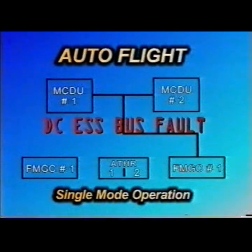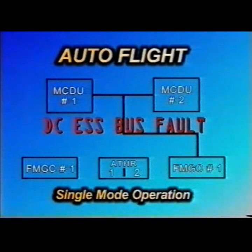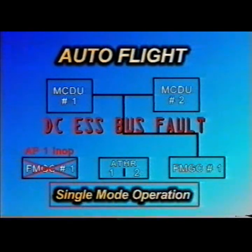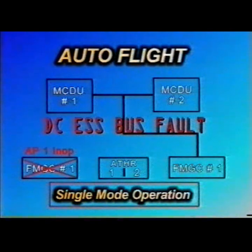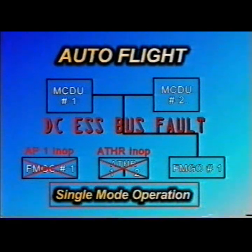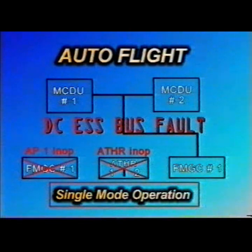With DC Essential Bus fault, FMGC1 is lost with consequent loss of Autopilot 1. Autothrust is also lost for the remainder of the flight due to loss of Engine Interface Unit 2.